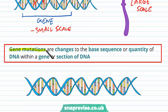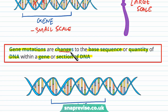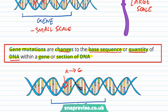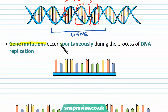More specifically, a gene mutation is a change to the base sequence or the quantity of DNA within a gene or a section of DNA. A gene codes for a particular protein, so it's a length of bases in a particular order. A gene mutation could be a change to the base sequence — for example changing one base to another, like an A to a G. Or it can be a change to the quantity of DNA, where some DNA is multiplied and repeated, or some is cut out, so the whole gene loses or gains a bunch of bases.